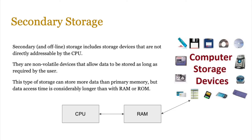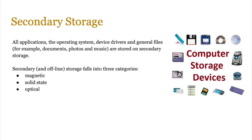They last a lot longer and you can get a huge amount of storage. They tend to be a lot cheaper. However, they're not very fast and they're not directly addressable by the CPU. All the applications, the operating system, device drivers and any files that you want to use — for example documents, photos, music — are all stored on secondary storage. When you need them, they're loaded into RAM so they can be processed by the CPU. There are three categories of secondary and offline storage: magnetic, solid state and optical.